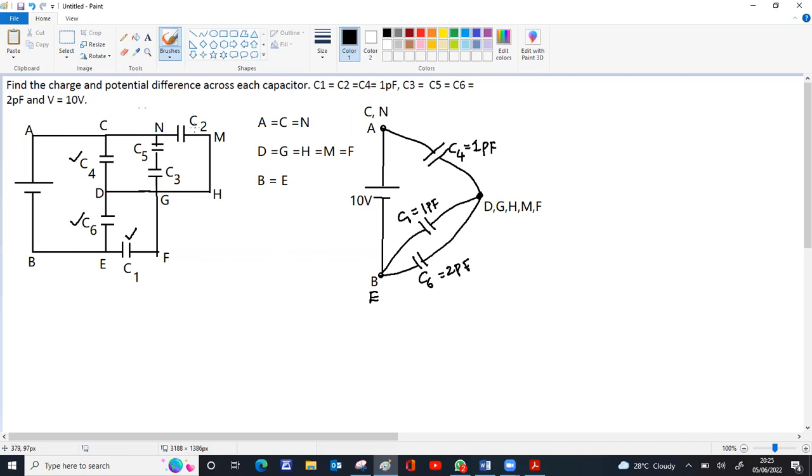Now C2, C2 is between N and M. M is here. So that capacitor is connected between C2. C2 is 1 picofarad.